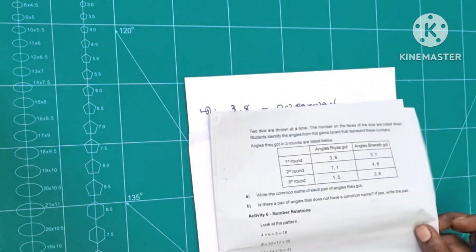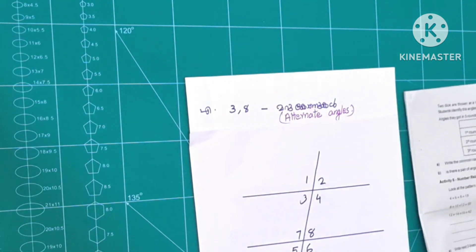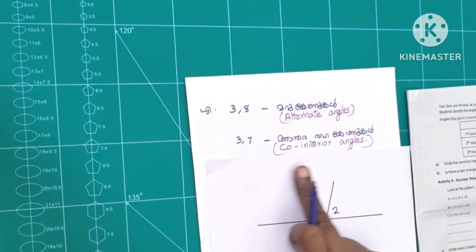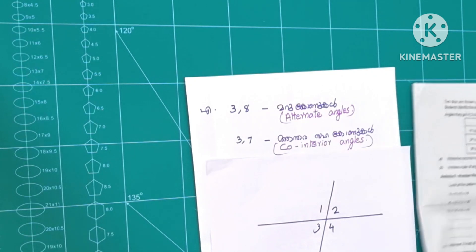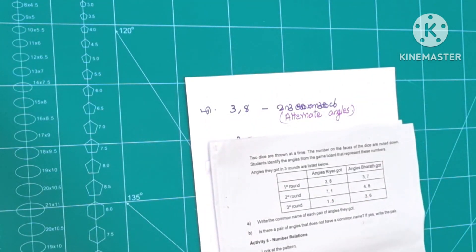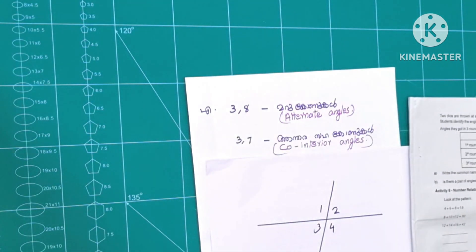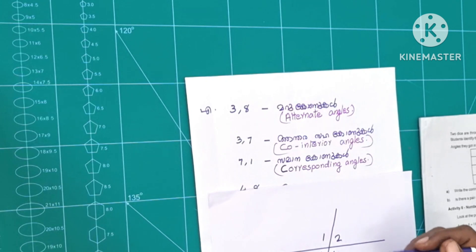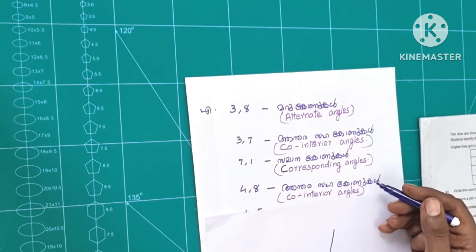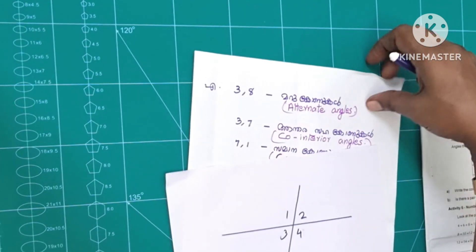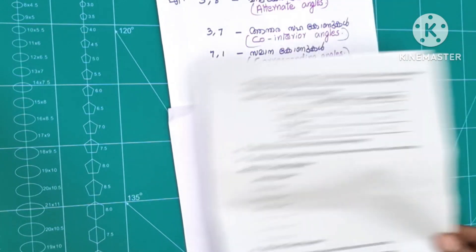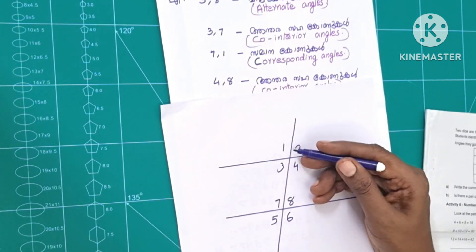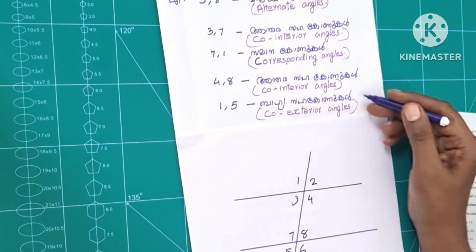Here are the alternate angles. In the second round, the corresponding angles are identified. The co-interior angles are also identified. In the second round: corresponding angles. The third step involves co-interior angles. The next step involves angles 1, 5, and 6 — these are co-exterior angles.